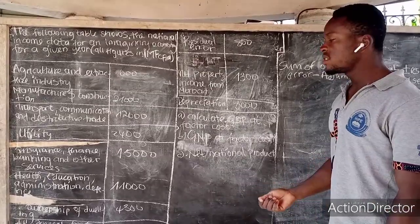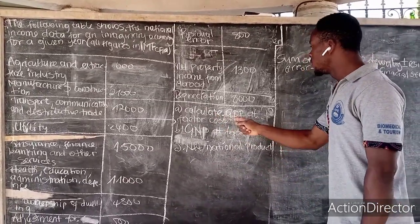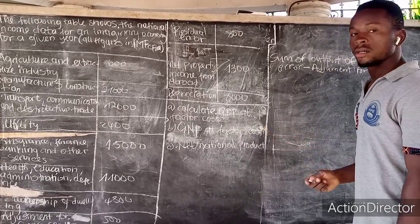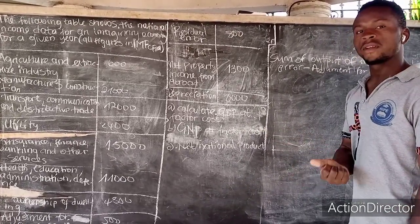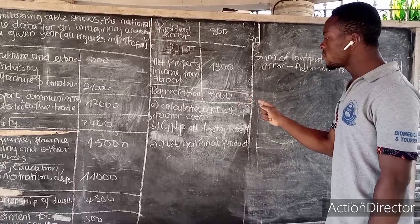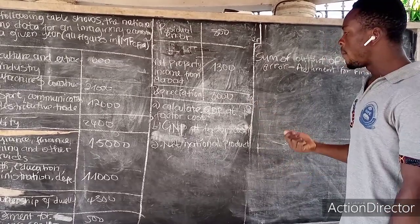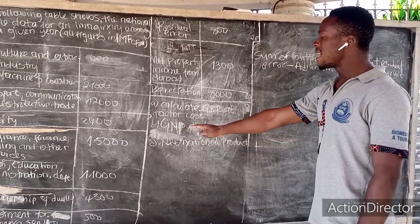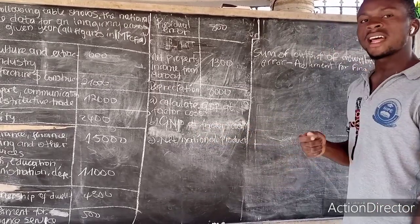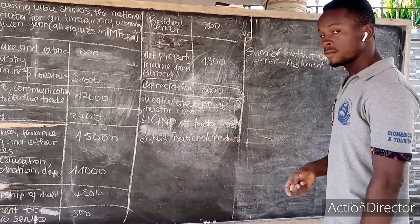Now in the question proper, we are asked: (A) calculate the gross domestic product at factor cost; (B) calculate the gross national product at factor cost; and (C) calculate the net national product.